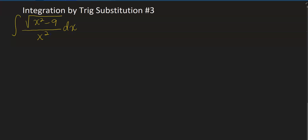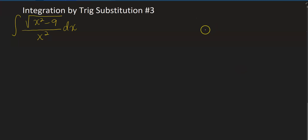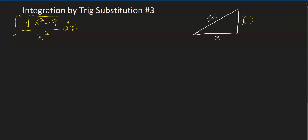This doesn't look like any substitution you have seen before. But when thinking about x² minus 9, we should think about a right triangle where x is the hypotenuse — because it's x² minus 9 — and 3 is one leg. That means the other leg is the square root of x² minus 9.